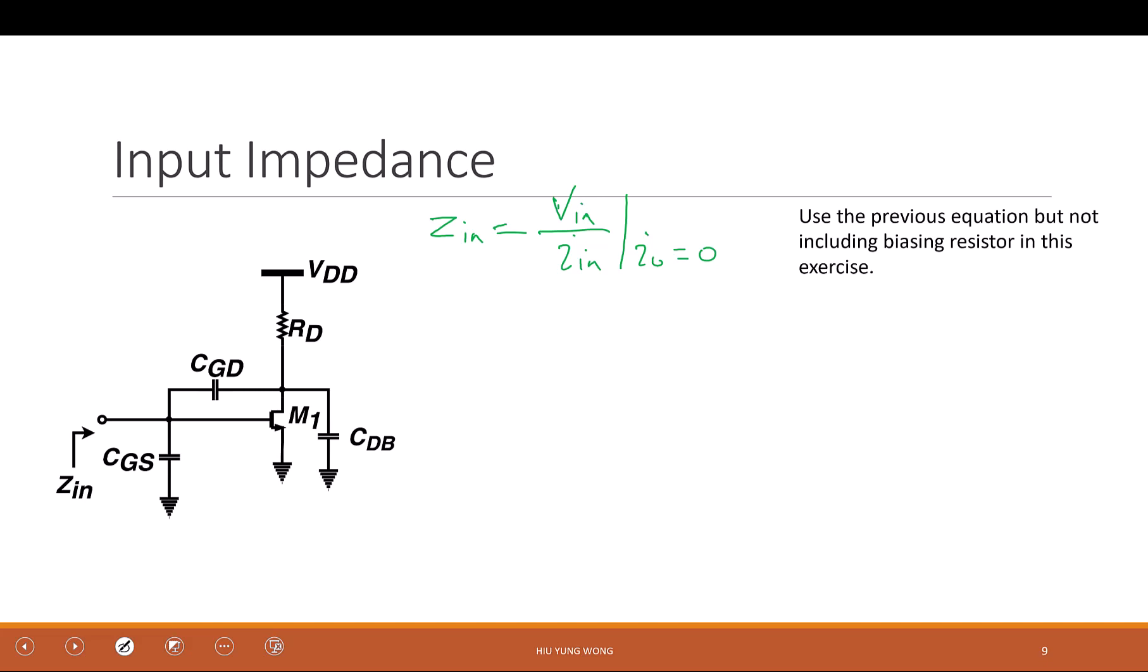The only thing is now, how do I see the Iin? I put Vin, I want to find their relationship. It's pretty straightforward. I see the Cgs, but this guy is not connected to ground. I cannot do that. So what can I do?